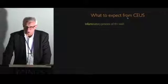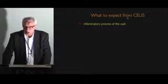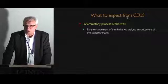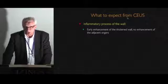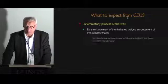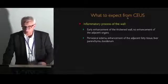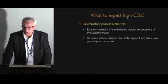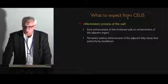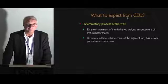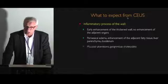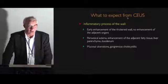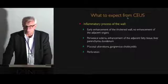What do you expect from CEUS? Number one: inflammatory process of the wall — we can image that. Early enhancement of the thickened wall, no enhancement of adjacent organs. And when the inflammation proceeds, we have perivasicular edema, enhancement of the adjacent fatty tissue, the liver parenchyma, and the duodenal wall. Then we have mucosal ulcerations and gangrenous cholecystitis, leading to perforation.